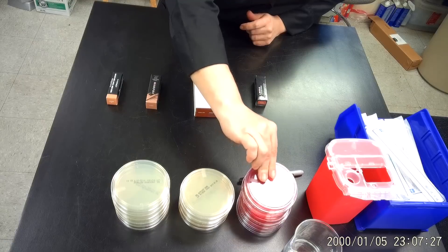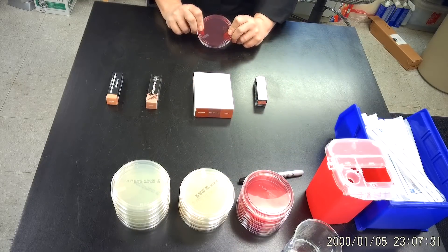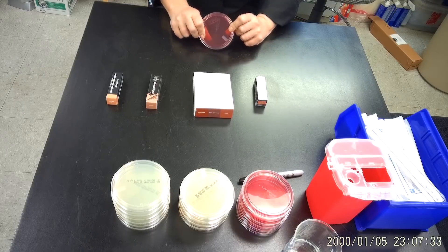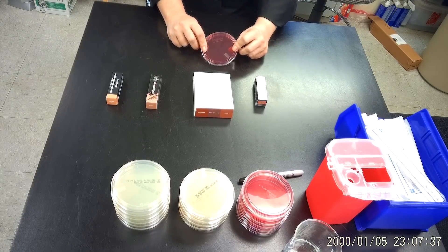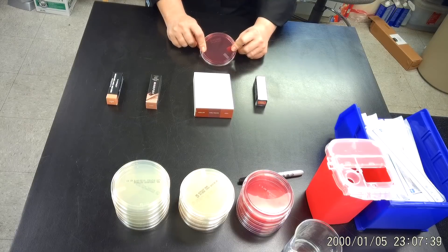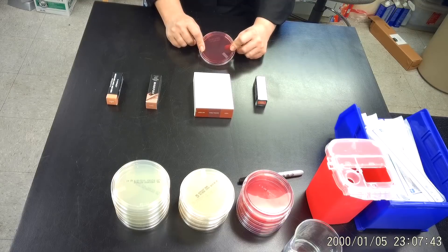The second plate is called a McConkey agar. That's what this one looks like. And what grows on here is coliform bacteria.